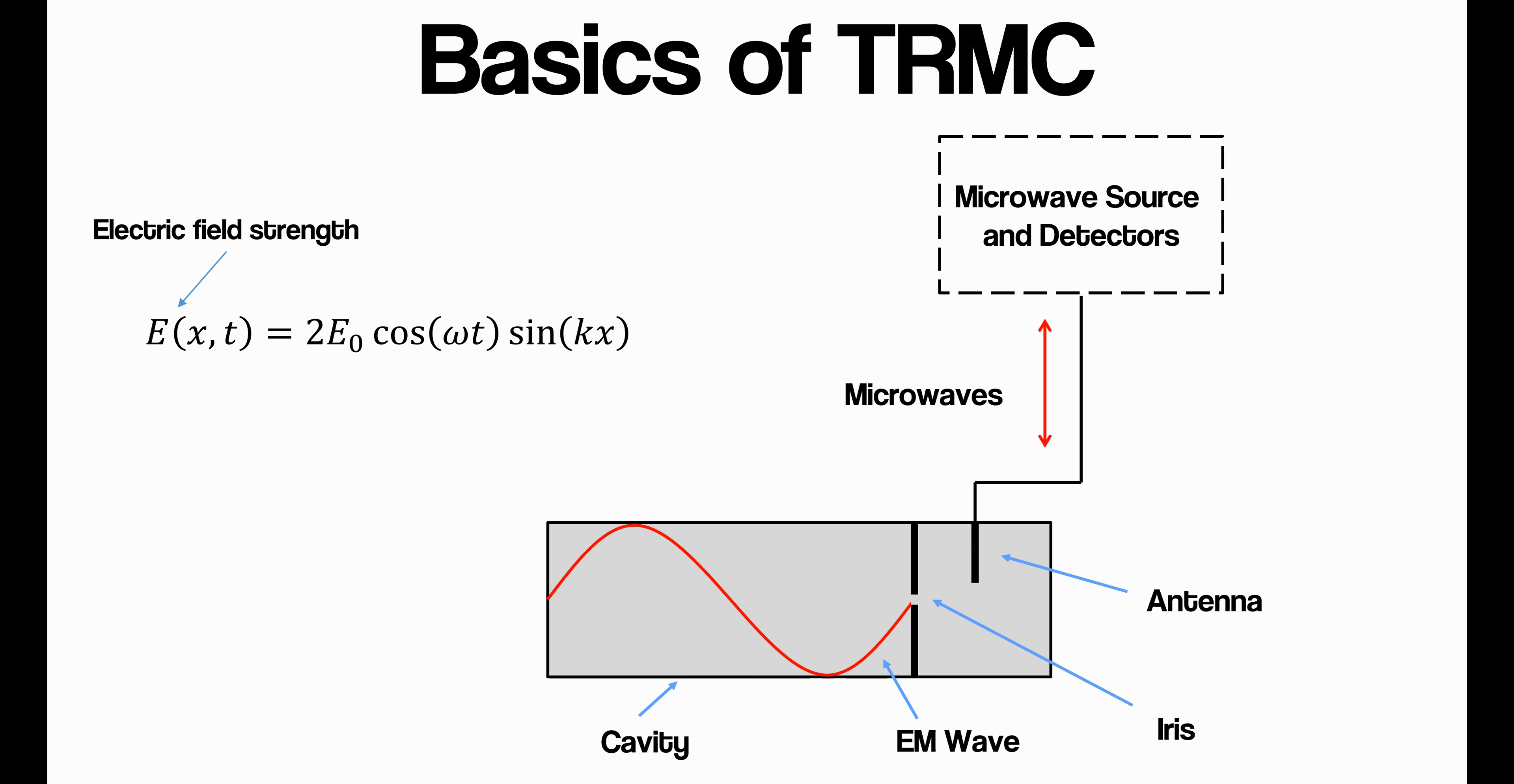And this is the equation for a standing wave, where we have E as the electric field strength. This E0 is the magnitude of the electric field, and then we see it varies as a function of both time and position. So we have the first time here, this cos omega t. Omega is the frequency of the microwaves, and t is time. And then sin kx, where x is the position in the cavity and k is the wave number.